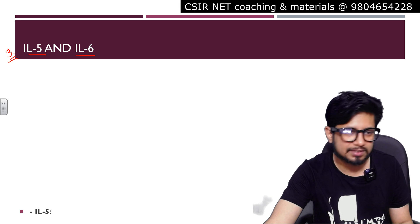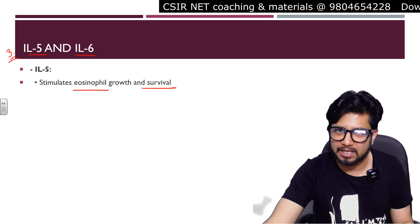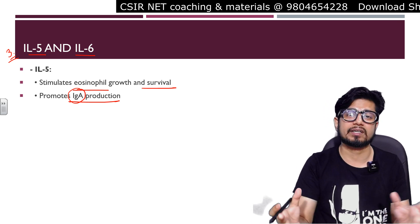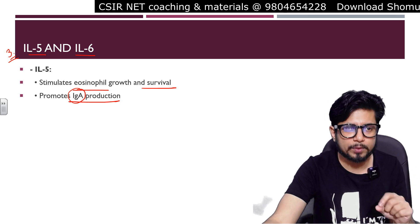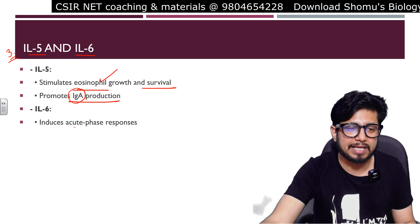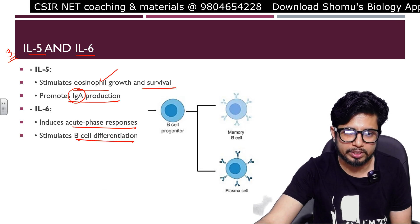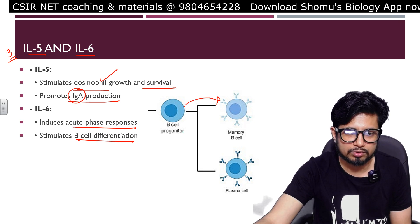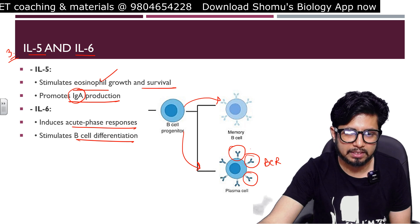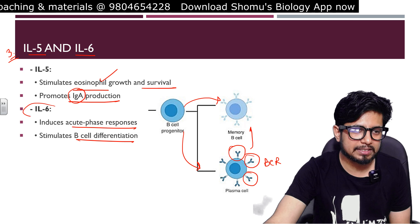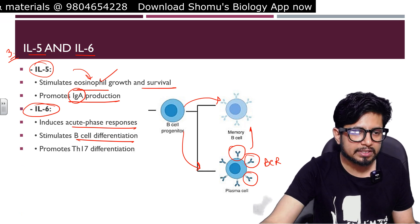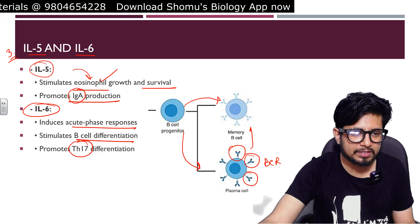Interleukin-5 stimulates eosinophil growth and survival and promotes IgA production. IgA is a type of antibody generally found in body secretions like tears and saliva. Interleukin-6 induces acute phase responses, stimulates B cell differentiation into plasma cells and memory cells — plasma cells produce antibodies and some B cells remain as memory cells for future reference. Interleukin-6 also promotes T helper 17 (Th17) differentiation.